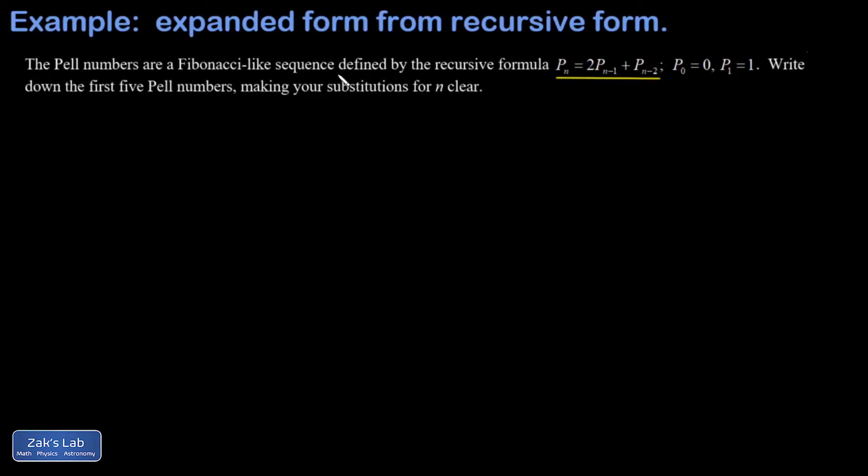This is a Fibonacci type sequence called the Pell numbers, and it's very close to what a Fibonacci sequence does except for that factor of 2 thrown in there. Now we're starting out at P_0 equals 0, P_1 equals 1.